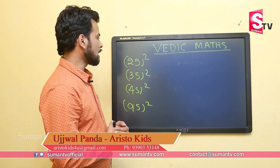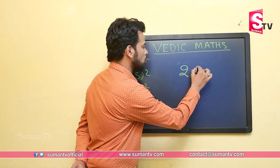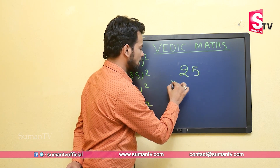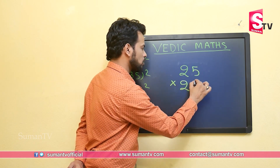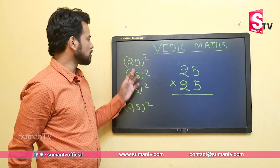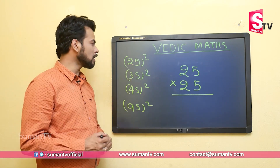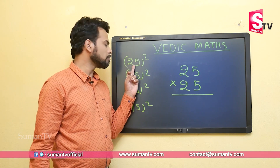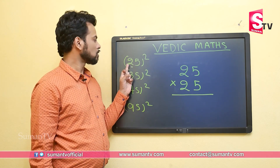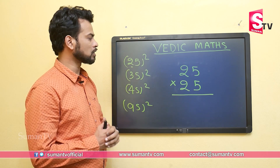Let's try this. So, 25 square means 25 multiplied by 25. A square means: if the number is multiplied by itself, what is the answer? That is called the square of that number.